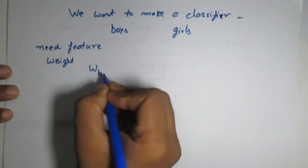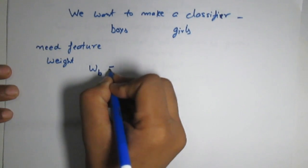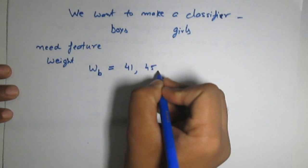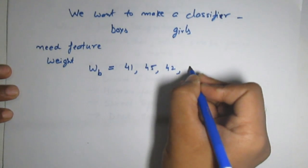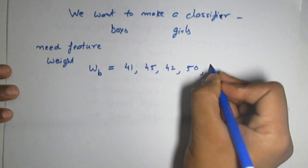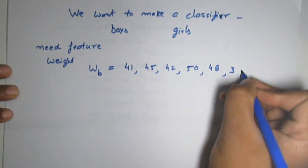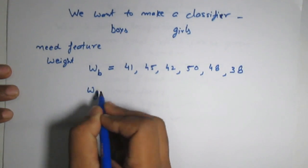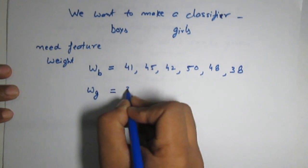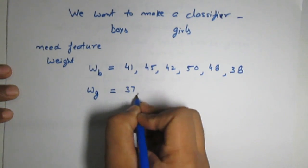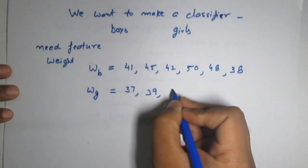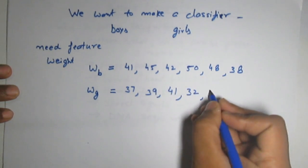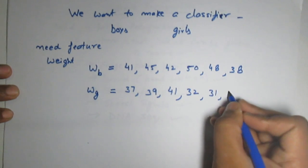Some examples of boys having weights 41 kg, 45 kg, 42 kg, 50 kg, 48 kg, 38 kg. Similarly, we have some examples from the girls class and the corresponding weights are 37, 39, 41, 32, 31, 33, 33.